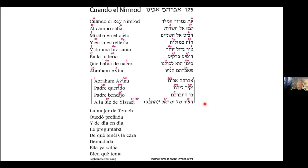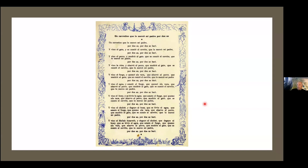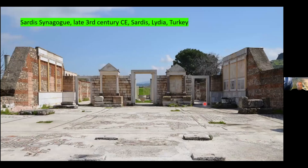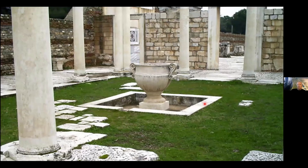I mentioned Ladino — a fascinating language, a Jewish dialect of 15th-century Spanish, written in both Hebrew and Latin characters, using letters no longer used in modern Spanish. For centuries, Spanish scholars have studied Ladino to learn how their own language was spoken hundreds of years ago. The presence of Jews in Turkey goes way back — one of the oldest and largest known synagogues is in Sardis, in the Lydia region of Turkey, with magnificent marble carving and beautiful mosaic floors.